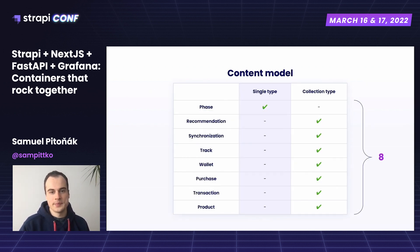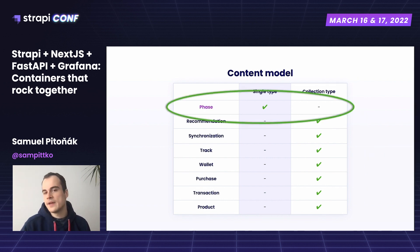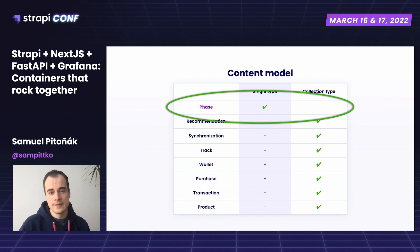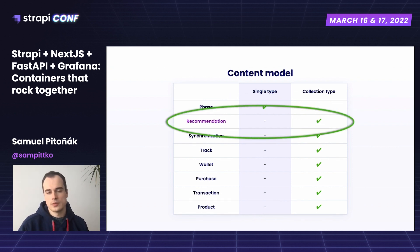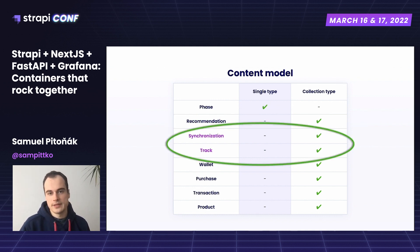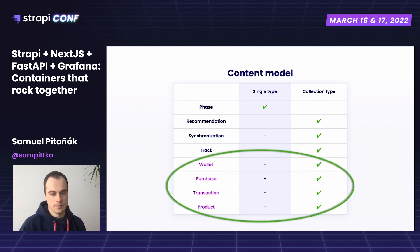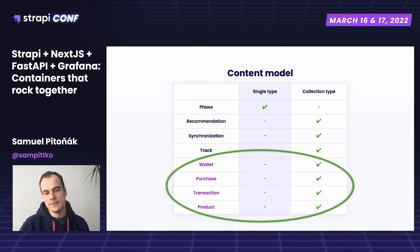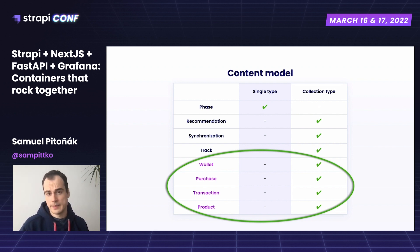I needed eight content types in total. The first is phase, the only single type, as there is only one phase at a given time in the experiment. Recommendations were shown to users to educate them on eco-driving. Synchronizations made sure that tracks were imported into the system. After importing tracks, wallet status or credits were updated to allow participants to purchase products or be ranked among other participants based on their eco-score.